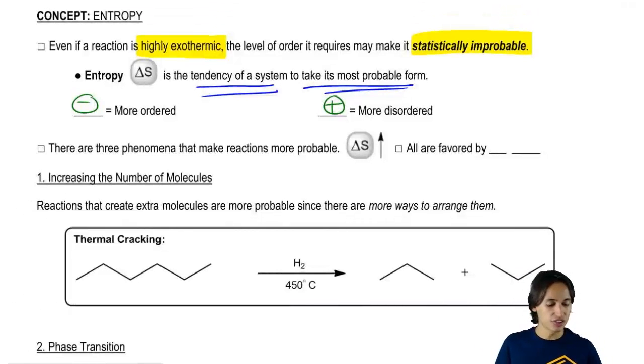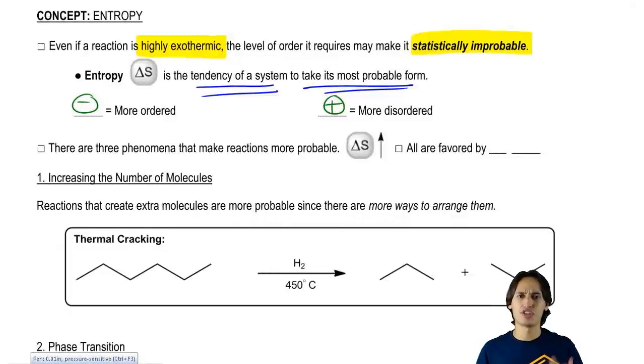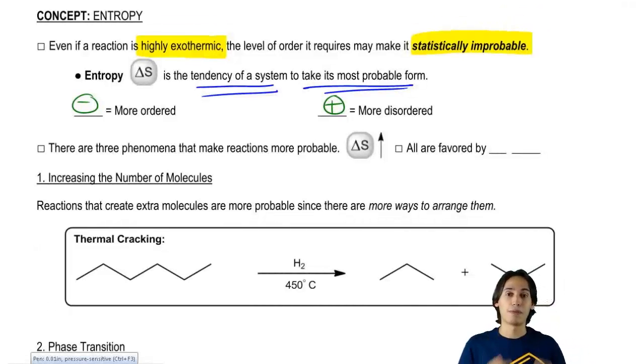And it turns out that we're never going to have to calculate the entropy of the surrounding environment or the entropy of a system because we don't have the tools to analyze that in Orgo 1.